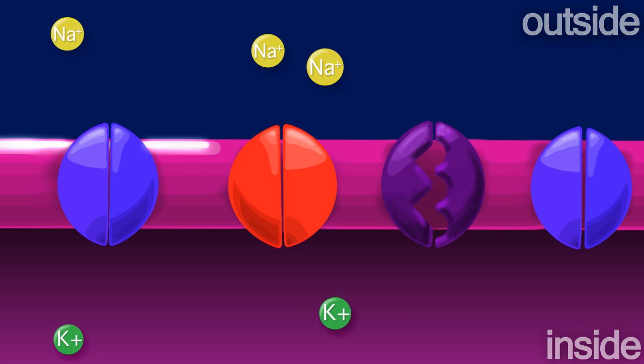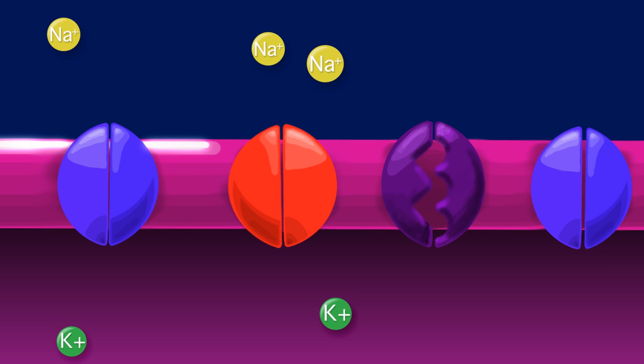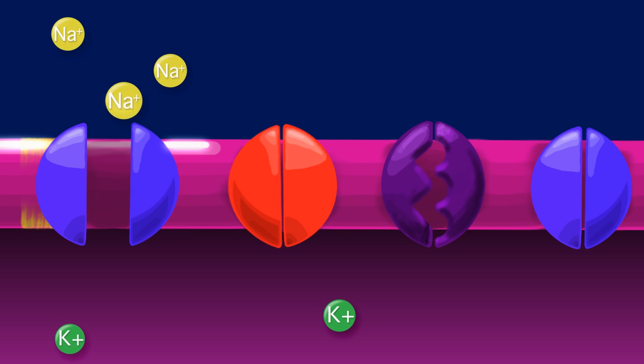The interior of the cell has a charge of negative 70 millivolts when it is resting. When a stimulus is received by the neuron, the sodium gates open and sodium rushes into the cell.